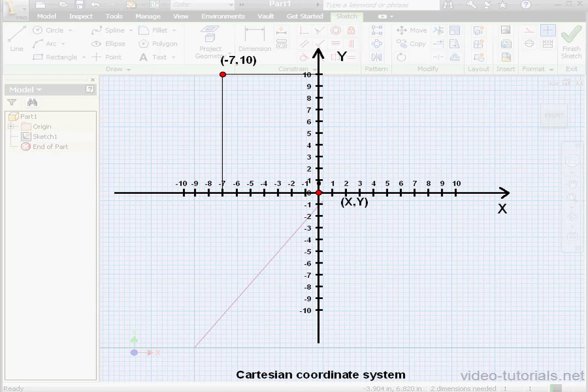Let's take a look at one more point, a point with negative values in both the x- and y-directions. This point has coordinates negative 5, negative 9.